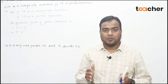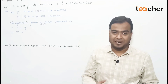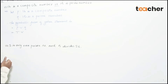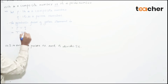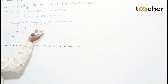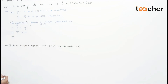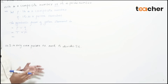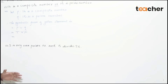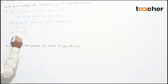So '15 is a prime number' — this statement is false, because 15 is not a prime number. Therefore the truth value of Q is false. Now for P ∨ Q: truth value of P is true, Q is false. We have learned in the disjunction truth table that if one statement is true, the final value is true. So the compound statement is true.